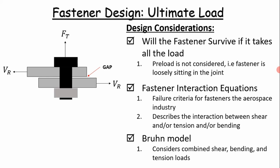Some key concepts before we dig into the details is the fastener interaction equations. This is basically the failure criteria used to evaluate fasteners in the aerospace industry. It describes the interaction between shear and/or tension and/or bending. In this presentation and in the Excel workbook we'll consider all three conditions simultaneously. Ultimately where this model comes from is Bruhn's textbook on space vehicles, kind of like the bible of structural engineering in the aerospace industry. It takes into account combined shear, bending, and tension loads.